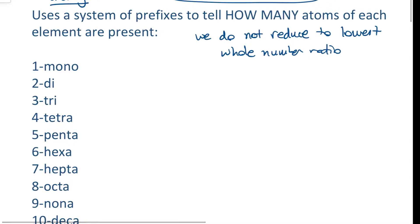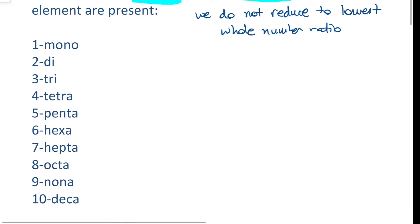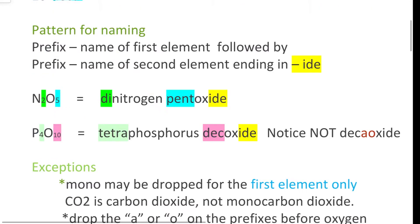First of all, covalent compounds use a system of prefixes to tell you how many of each atom is present. Here's the prefixes: mono, di, tri, tetra, if you've played tetris, penta, the pentagon, hexa, hepta, octa, nona, deca. You probably recognize all of these prefixes except for maybe hepta, maybe nona.